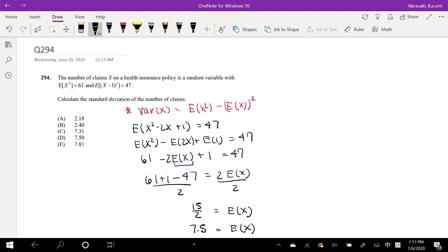Okay, well, we have everything we need to plug it into our formula right here. Okay, so the variance of x we can say is E(x²), which we know is 61, minus expectation squared, that's 7.5, the whole thing squared, right?